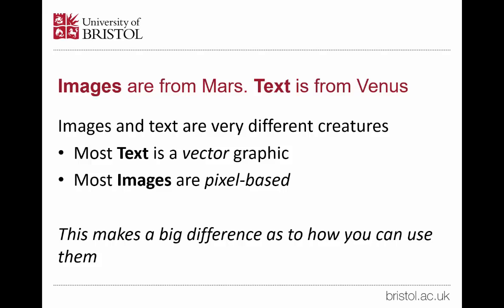Fundamentally, most images and text are quite different. Generally speaking, text is what's known as a vector graphic, and most images are pixel-based. This makes a huge difference to how you can actually use them.